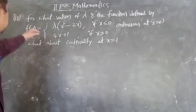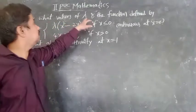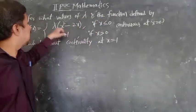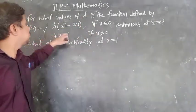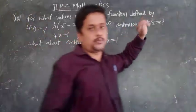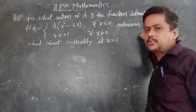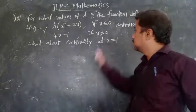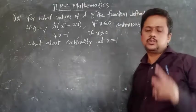Next, question number 18. For what values of lambda is the function defined by f(x) = λ(x² - 2x) if x ≤ 0, and 4x + 1 if x > 0, continuous at x = 0? We have to find the value of lambda.